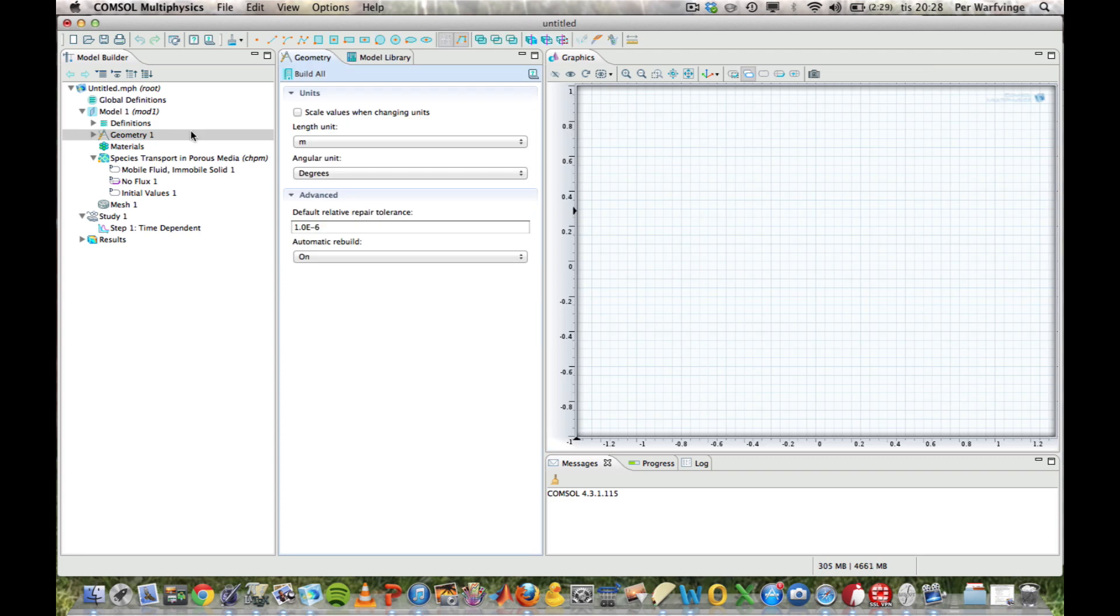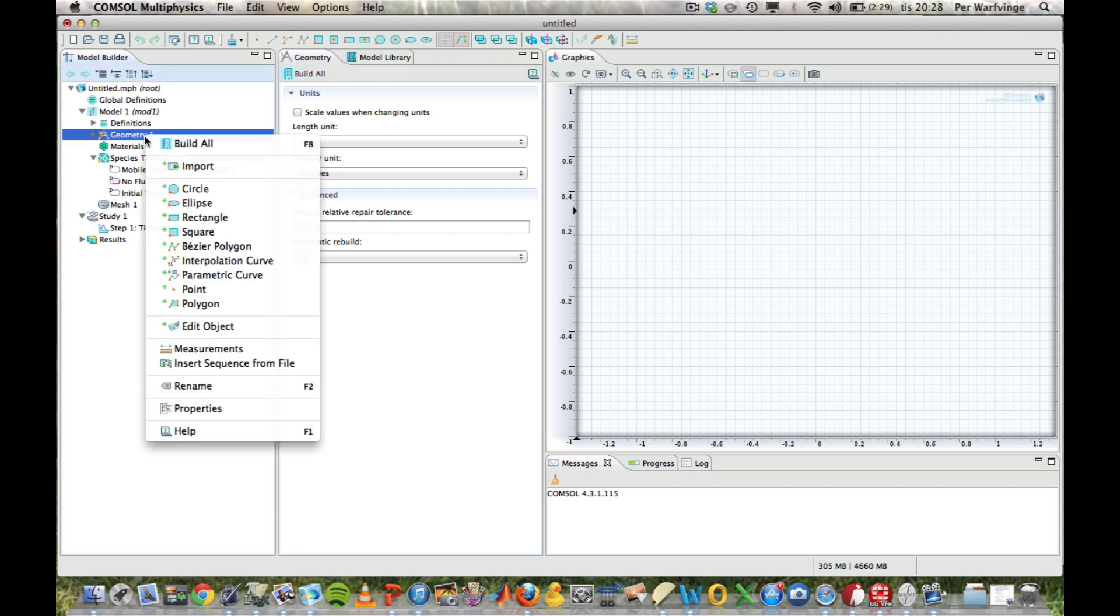First thing we're going to do is to define the geometry. So, we're going to make a rectangle, which is 10 by 1. There are two ways to draw it. Either we draw it using these symbols up here, but I will actually define it with numbers. So, I put the cursor here, I right-click, and I can select Rectangle.